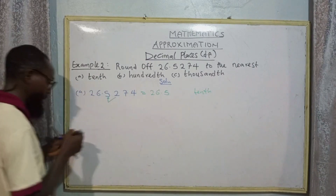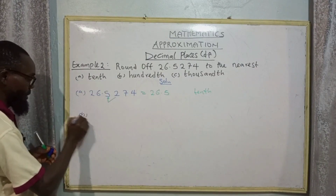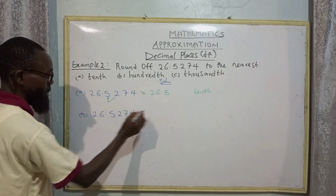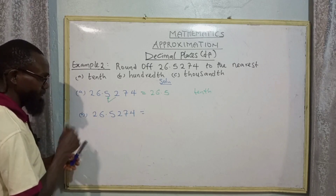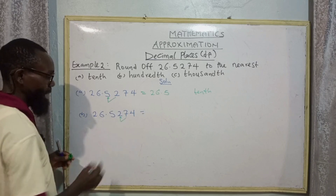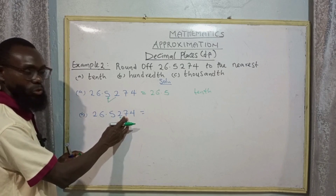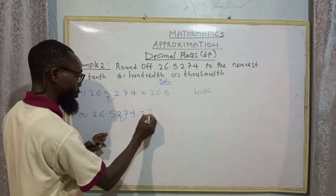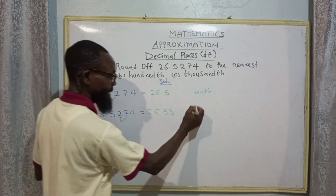For the nearest hundredths: in 26.5274, five is tenths and two is hundredths. When you look to the right, we have seven. Seven is between five to nine — round up to one, add one to this two making three. So we have 26.53 to the nearest hundredths.